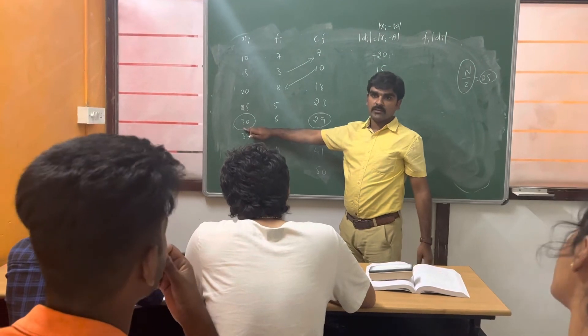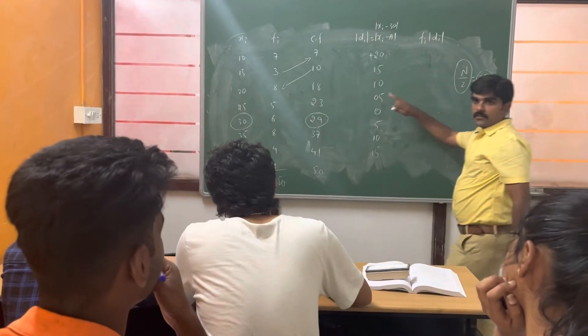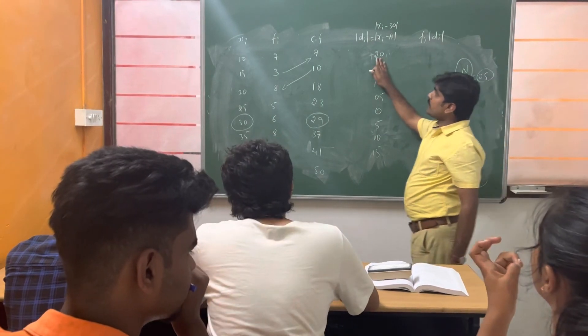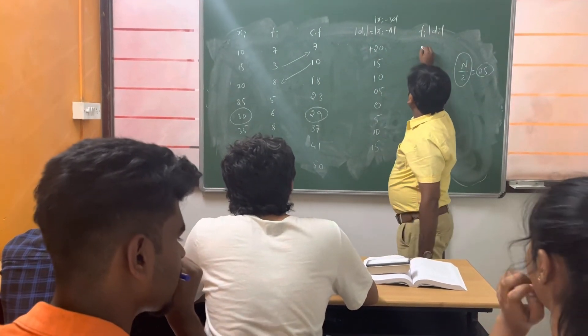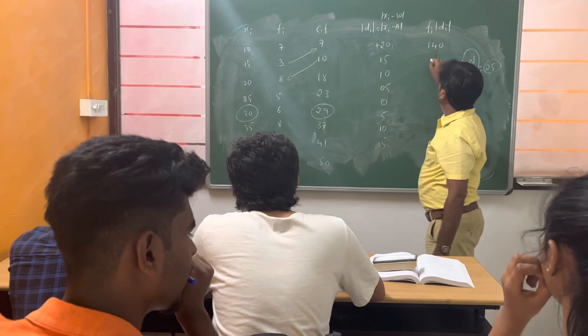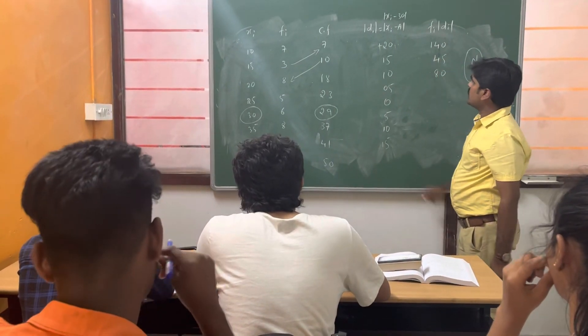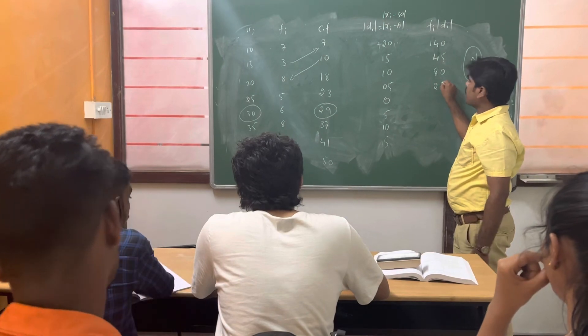This is what our di. Right? Next, multiply this. Fi into di. Multiply the first one. 140. Next, 45. 80. Next, 25. 0.